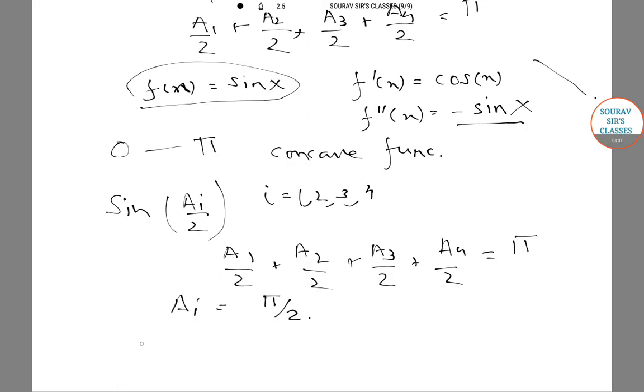So sin a1 by 2 plus sin a2 by 2 plus sin a3 by 2 plus sin a4 by 2 is less than or equals to